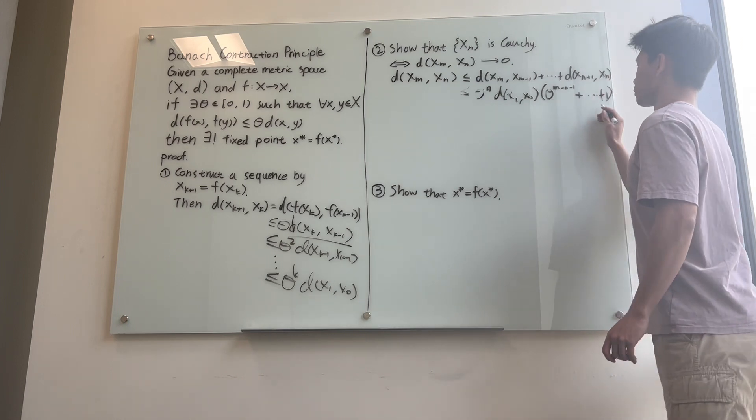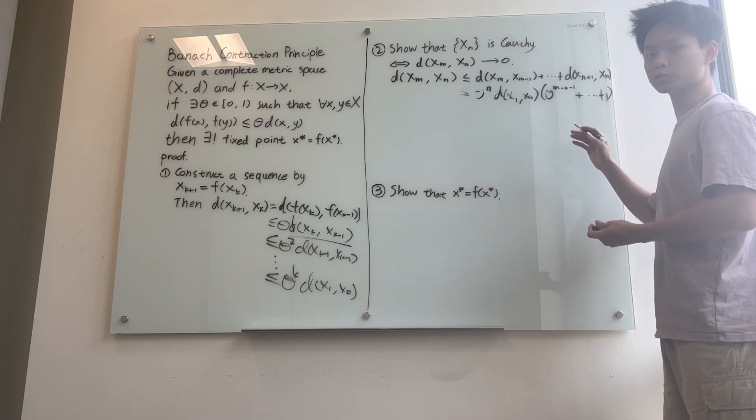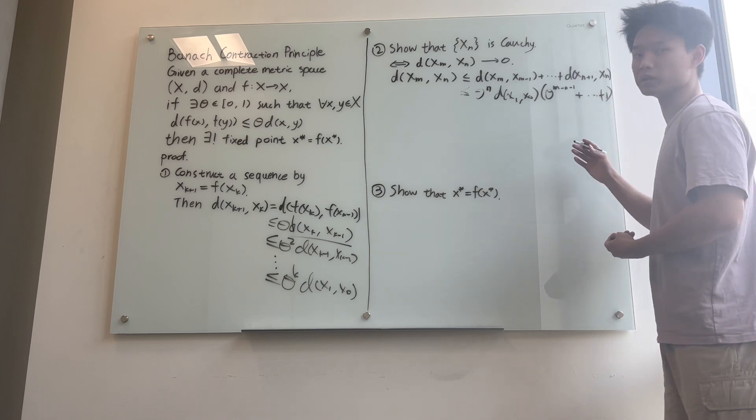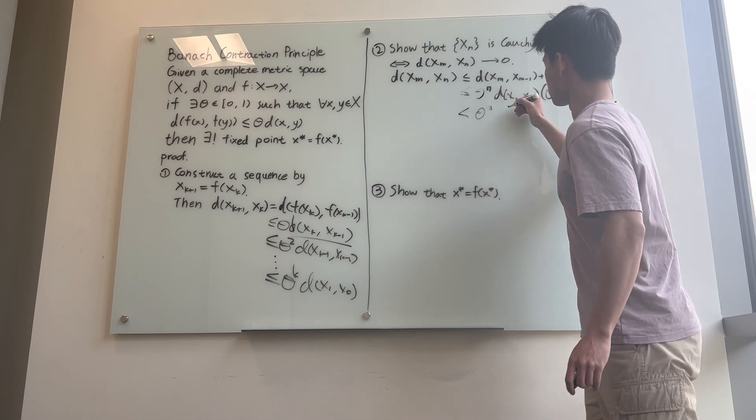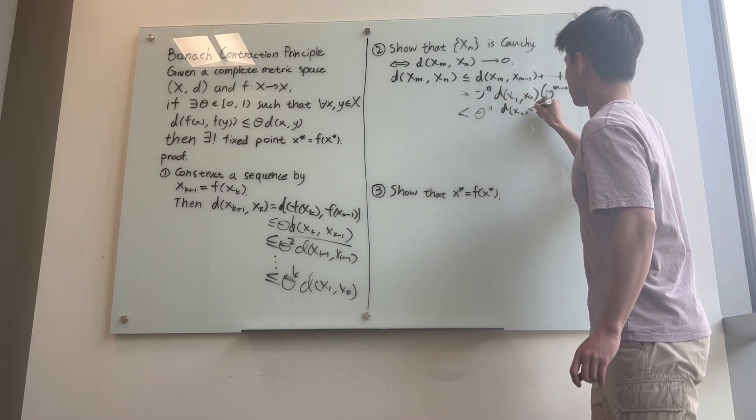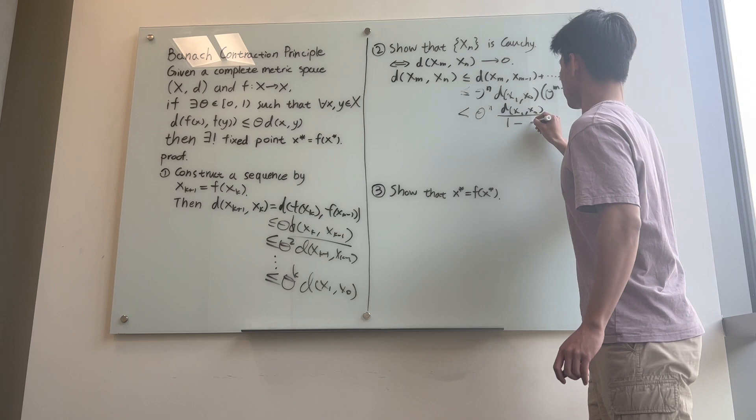And this thing right here is less than the geometric series whose formula is given by 1/(1-theta). And so this whole thing is less than theta^n times d(x_1, x_0) over (1-theta).